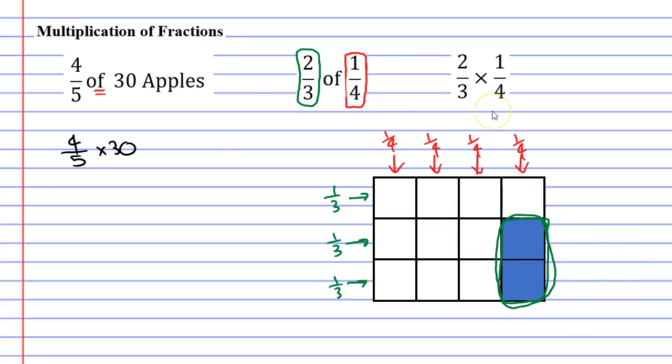What's our new fraction going to be? Well, we have two squares colored in. And how many squares in total? 1, 2, 3, 4, 5, 6, 7, 8, 9, 10, 11, 12 squares in total. So we have the fraction 2 over 12. Two-thirds of a quarter is 2 over 12, which can also be simplified to 1 over 6.